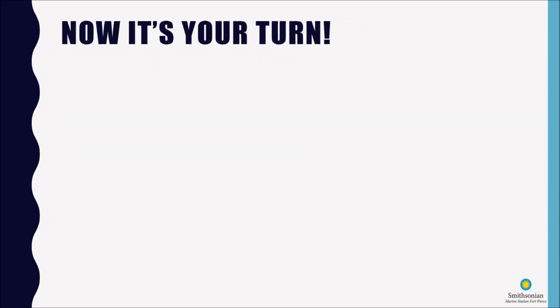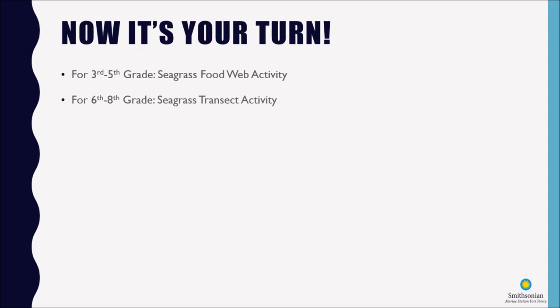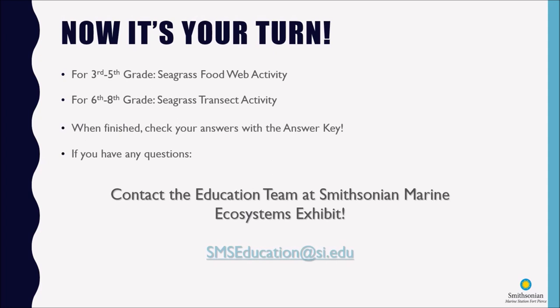Now that we know a little bit about seagrass ecosystems, it's your turn. There are two different activities for this module. For 3rd through 5th grade, you'll be putting together a seagrass food web — you'll have a list of organisms that live in and depend on seagrass beds, put them together in your own food web, and check your answers with the answer key. For 6th through 8th graders, you'll take on the role of a marine science researcher studying seagrass coverage, using the illustrated transect included in the module to calculate the percentage of coverage and the number of seagrass species found. When you're finished, check your answers with the answer key. If you have any questions, please contact us at the aquarium — our email address is smseducation@si.edu. Thank you and have a great day!